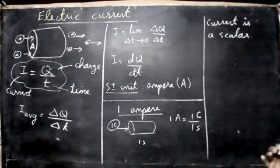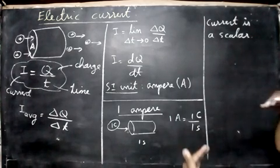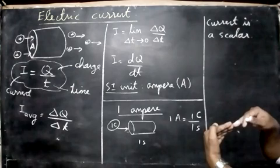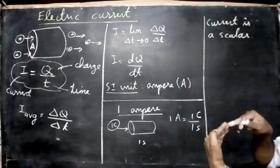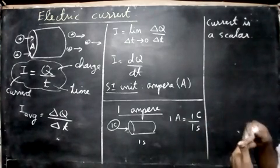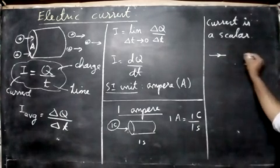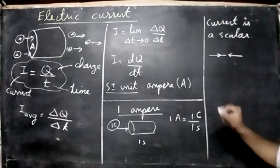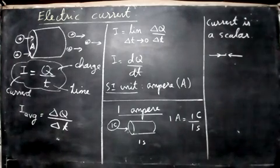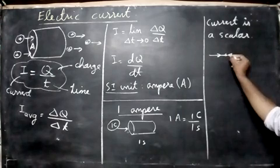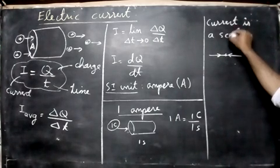So why? Because if suppose current is a vector means if two currents come and hit each other, what will happen? Vectors can be added or subtracted. But you see if two currents come this way, one current comes this side and the current comes this side. Then we have to take the sum only. You have to take the sum.